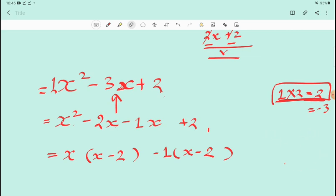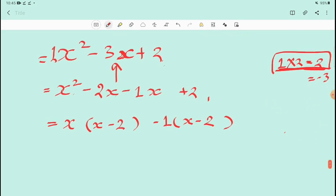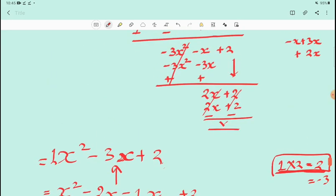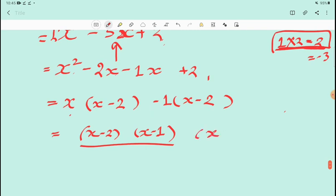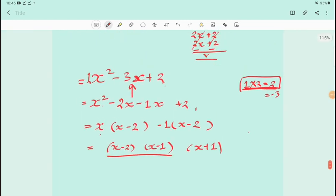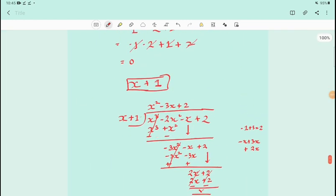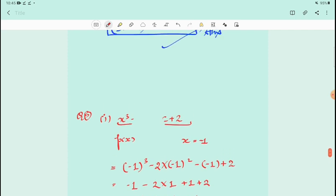Okay, so now we have it this way. Now what will we do? Write x - 2 here and x - 1 here. So our factors: we got these, and one factor was x + 1. So x + 1, these three are our factors. Is it clear? These three factors we have made here.